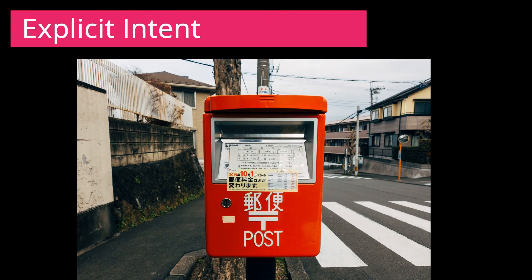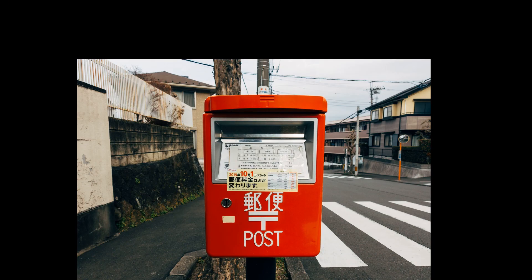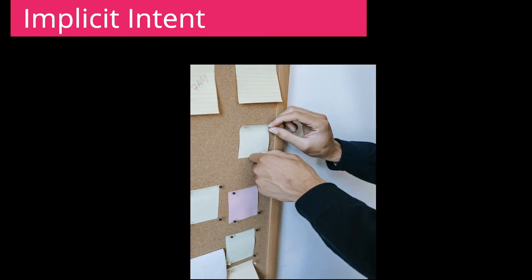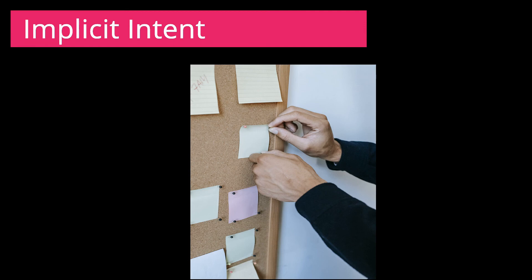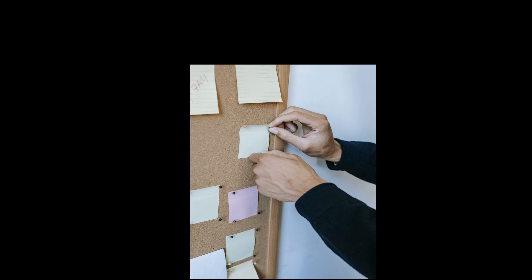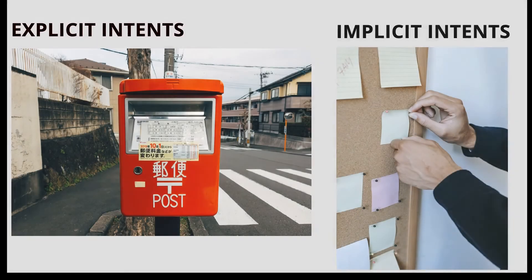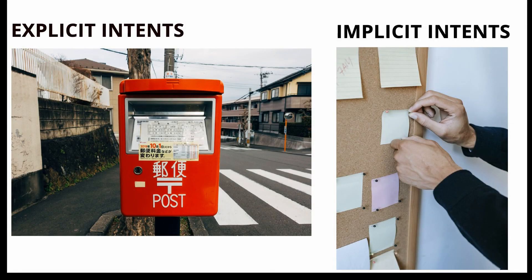Explicit intents can be compared to the postal system where post mail is specific to a receiver address, whereas an implicit intent can be compared to a job notice board where any person could see the notice board and take up a job.